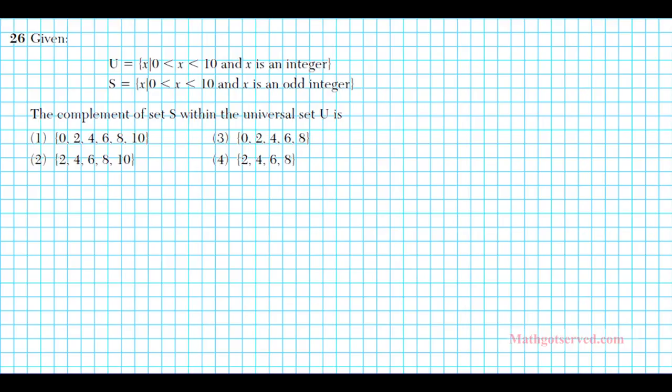Let's take a look at problem number 26. It says given sets U, x such that x is between 0 and 10 and x is an integer, and S equals x such that x is between 0 and 10 and x is an odd integer. The complement of set S within the universal set U is.